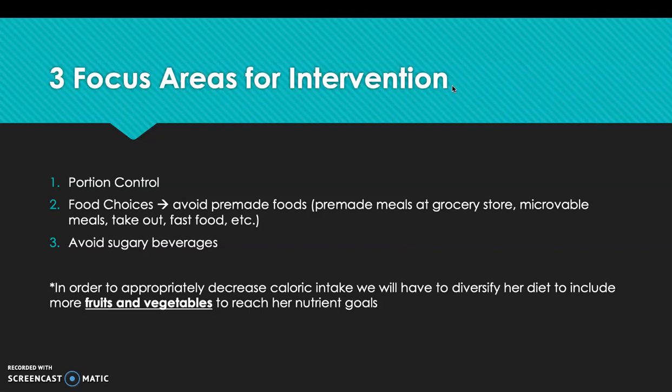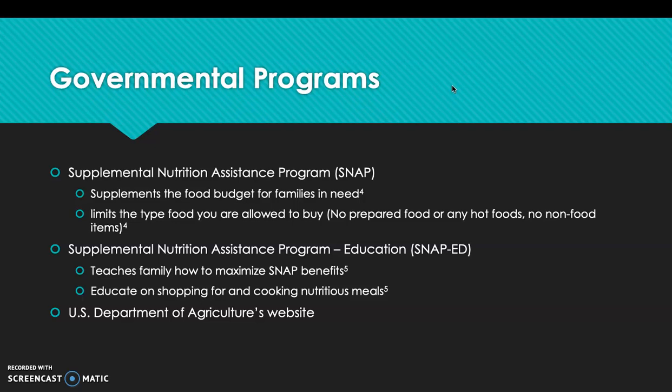For governmental programs that can provide assistance, the Supplemental Nutrition Assistance Program, known as SNAP, supplements the food budget for families in need and limits purchases to certain food items — for example, you cannot buy prepared hot food or non-food items. SNAP-Ed is a supplemental program that teaches families how to maximize SNAP benefits and educates on shopping and cooking nutritious meals. More information and eligibility can be found on the USDA website.